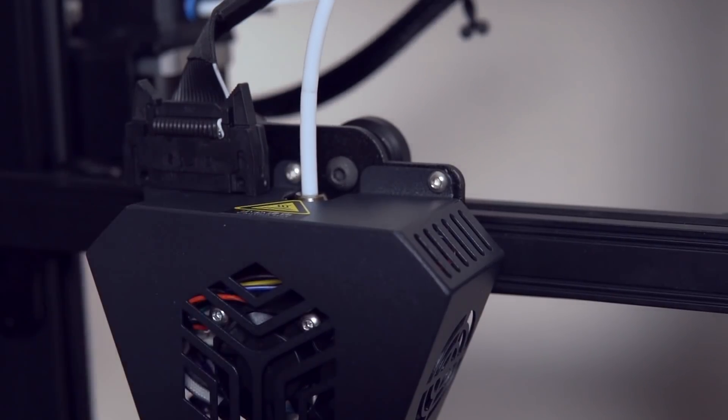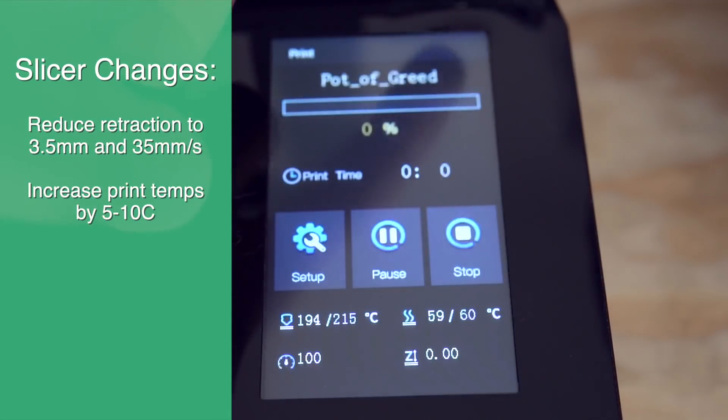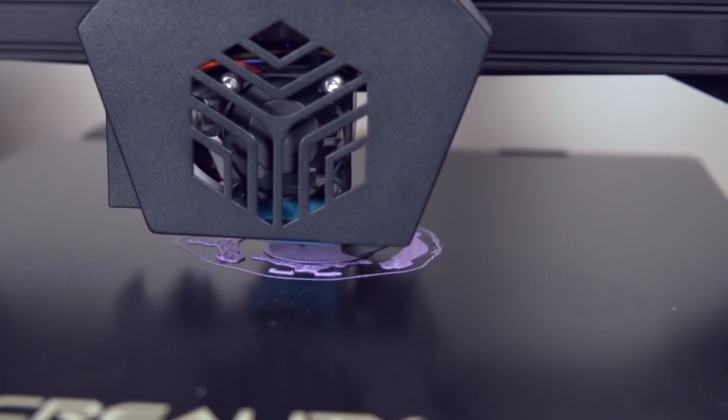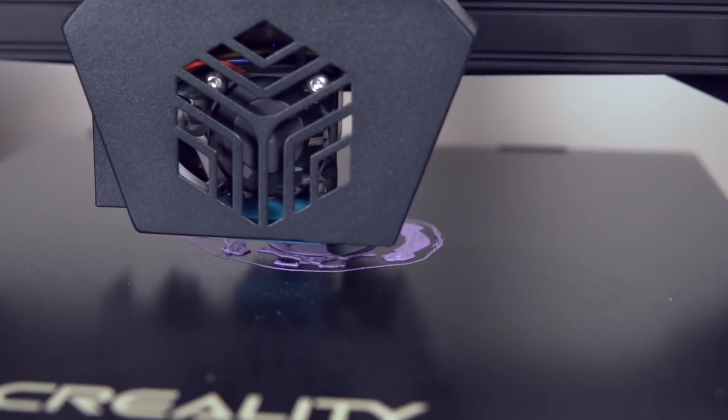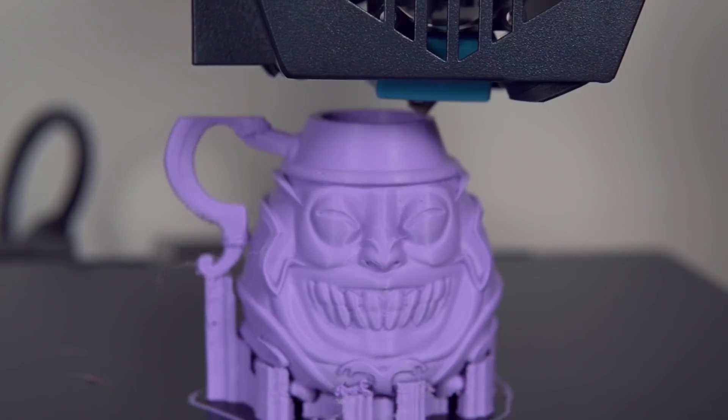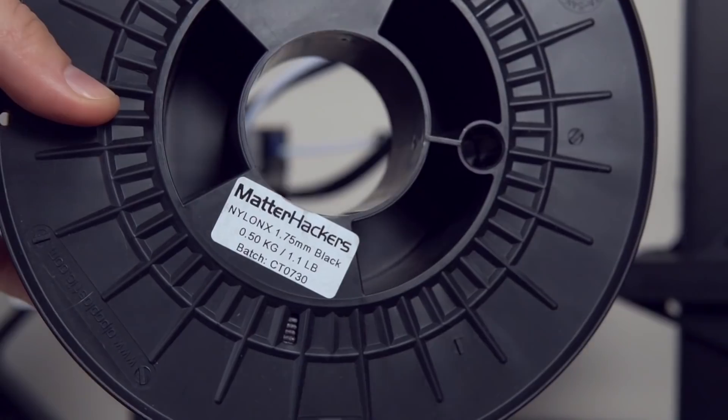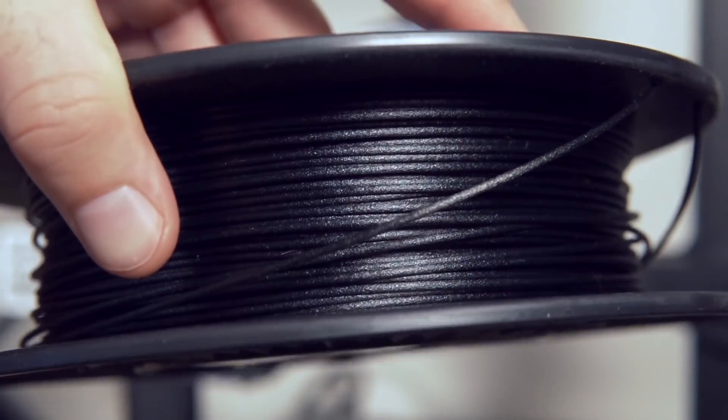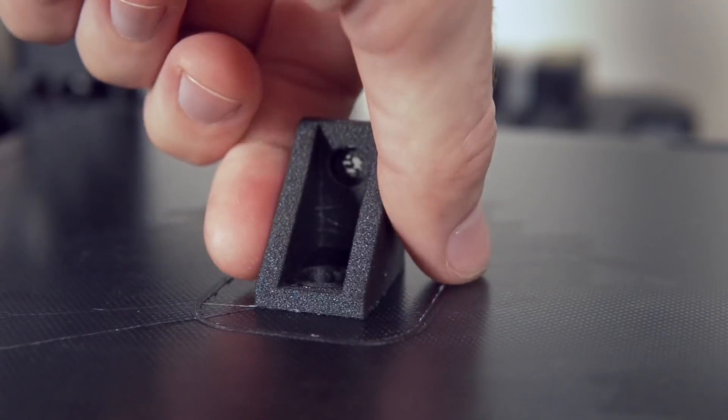Micro Swiss does recommend changing your slicer's retraction distance to three and a half millimeters and the retraction speed to 35 millimeters a second for this hotend. Also, using an all metal hotend will often require a slight bump in temperature from five to ten Celsius roughly from what you were previously printing at. The first thing I did after install was to print out the pot of greed that came on the printer in PLA just to make sure that everything was working correctly. After I saw that it was, I loaded up some nylon X to print out a small corner bracket in this carbon fiber nylon, which isn't something I could do before I had this hotend installed.